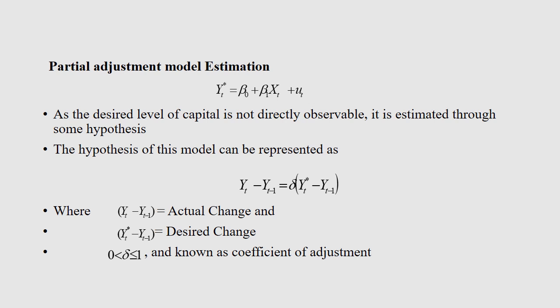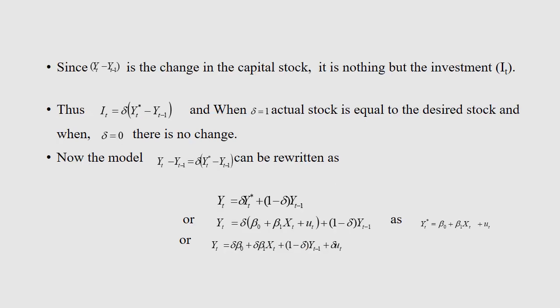The hypothesis of this model is represented as: yt - yt_minus_1 = delta * (yt_star - yt_minus_1), where yt - yt_minus_1 is the actual change and yt_star - yt_minus_1 is the desired change. Delta lies between 0 and 1 and is known as the coefficient of adjustment. Since yt - yt_minus_1 is the change in capital stock, it is nothing but investment — investment is the change in capital stock. When delta equals 1, the actual stock equals the desired stock; when delta equals 0, there is no change.